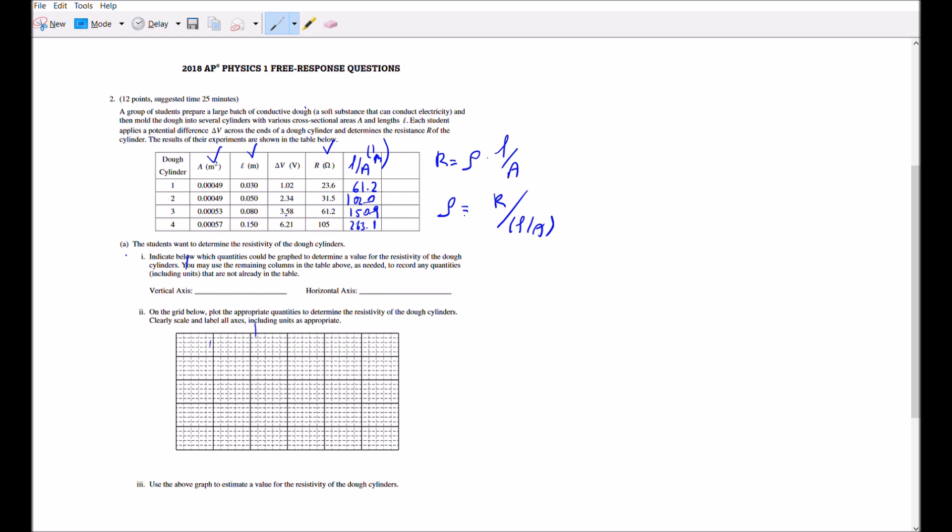To place this on the graph, if you look at the equation, resistance over L over A—resistance should be placed on the vertical axis, which is y, in units of ohms. The x-axis should be length over area in the units of one over meters.